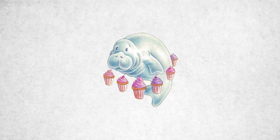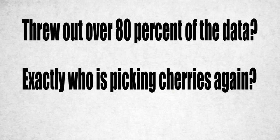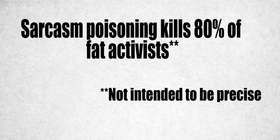Which is funny, since the 2010 study that Willett published — the one that found early mortality risks lowest among people with a so-called normal BMI — threw out over 80% of the data to get to the status-quo-upholding result. He deleted anyone who had ever smoked or had a history of cancer or heart disease. So, who picked the cherries here, exactly?